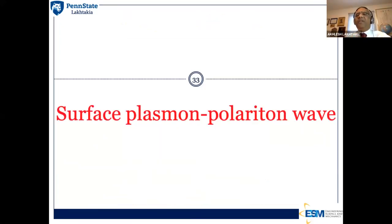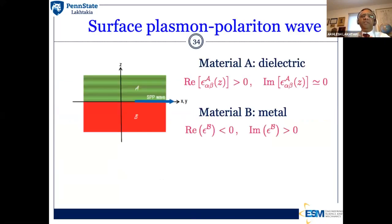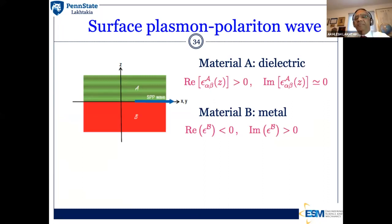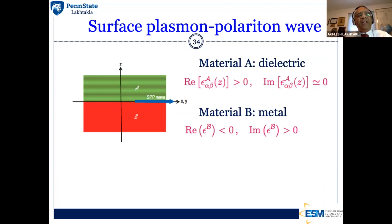Back to surface plasmon polariton waves. We have two materials: material A is a passive dielectric — it can be isotropic or anisotropic, and either homogeneous (properties independent of location) or periodically non-homogeneous along the thickness direction parallel to the Z-axis. Material B we take to be a plasmonic metal, whose permittivity scalar has a negative real part, although its imaginary part is still positive.